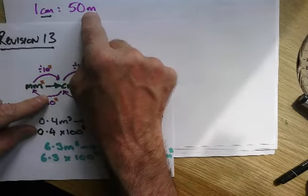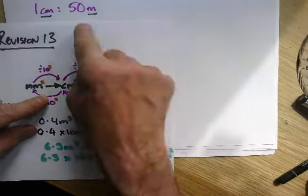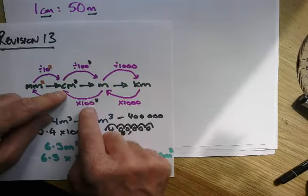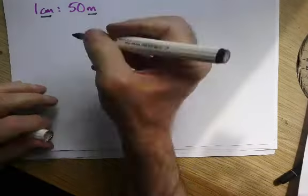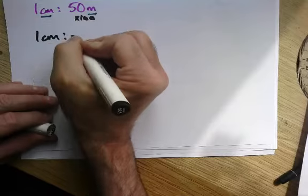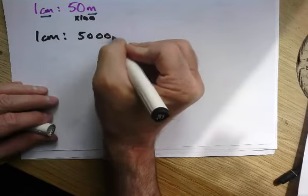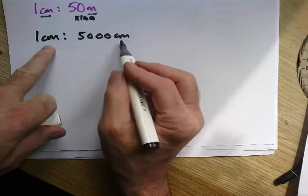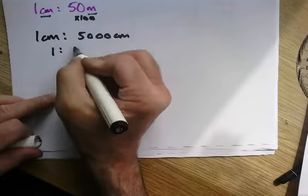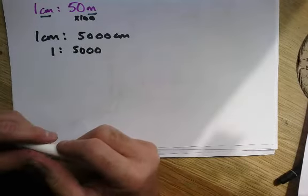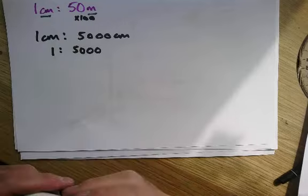Times that by a hundred to convert it to centimeters. That means chuck two noughts on, and now because they're both in centimeters, same units, I could say it's one to five thousand, and that one is on there.